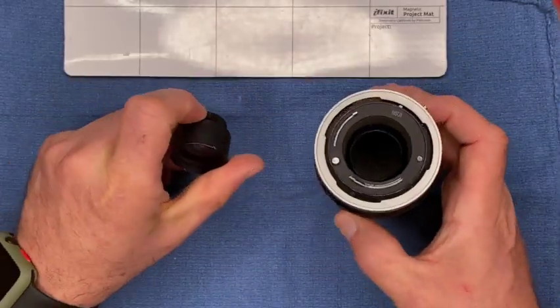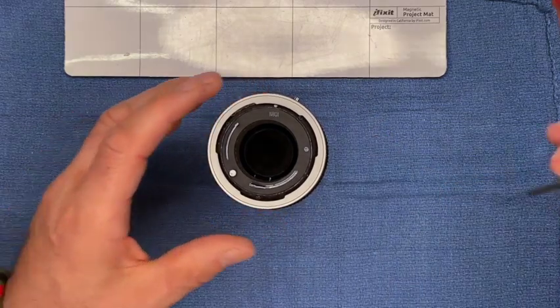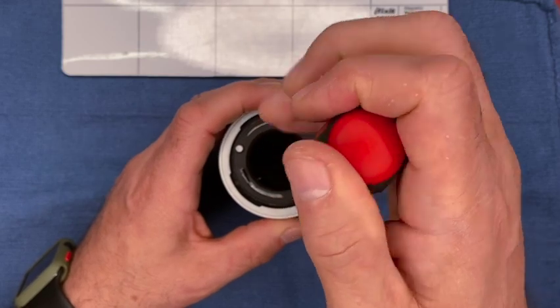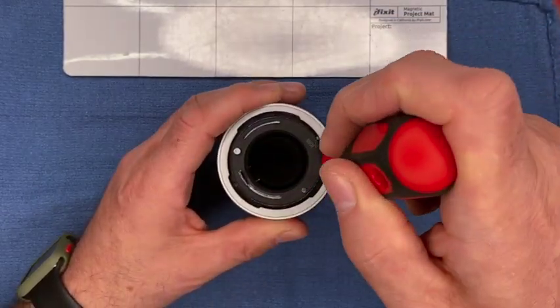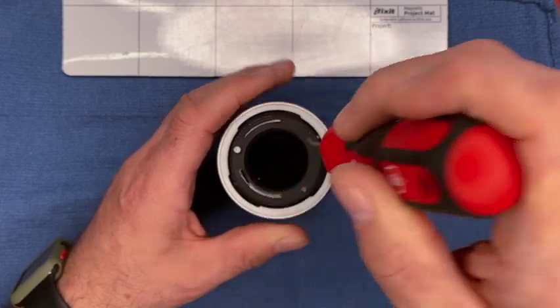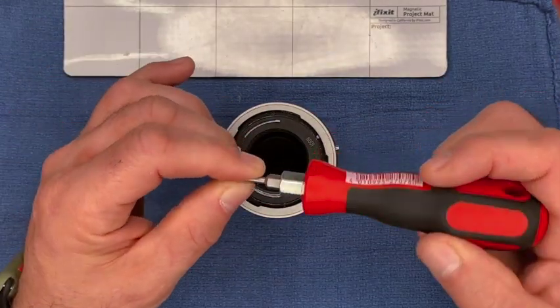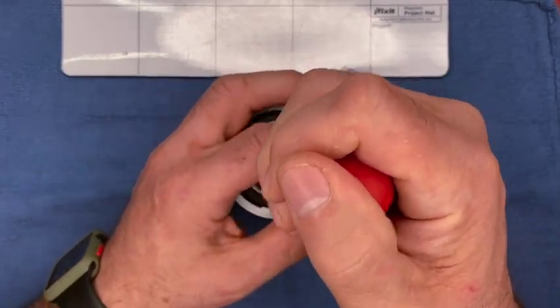So we set that aside and now we can take apart this lens. There's three screws around the perimeter that we're going to need to remove - here, here, and here. So here I'm using a Japanese standard JIS zero screwdriver.